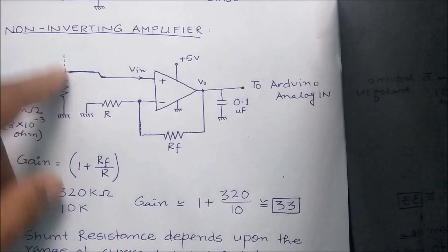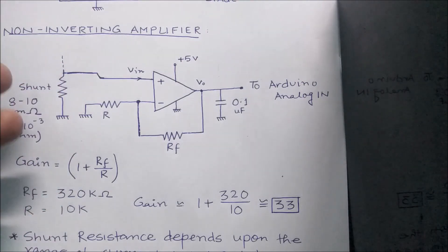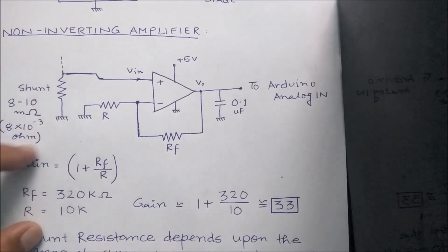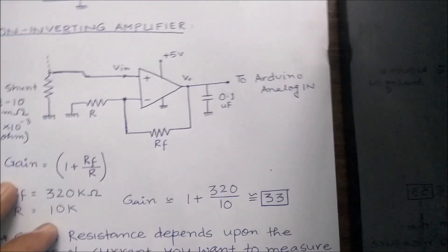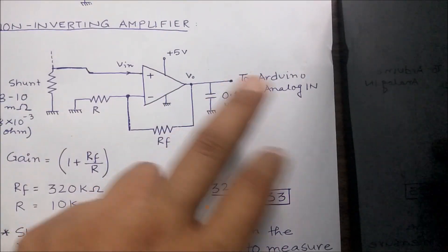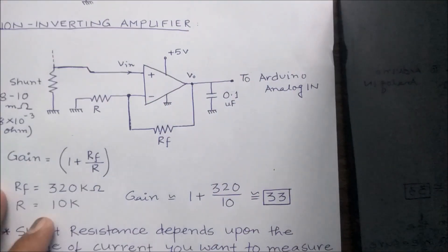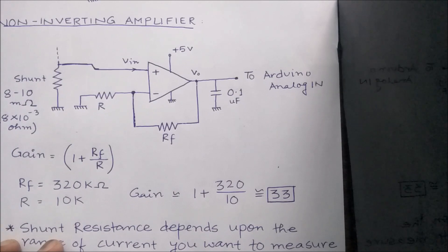One thing that we need to make sure before making the circuit is that we should choose the gain in such a way that when the maximum current is passing through the shunt, the amount of output voltage that is generated should be less than the supply voltage of the operational amplifier, or else your operational amplifier will work in the saturation region and further amplification won't be possible.